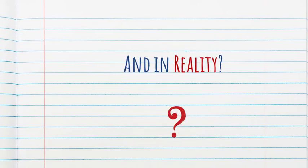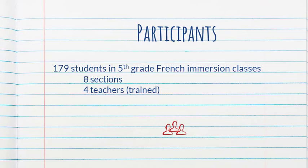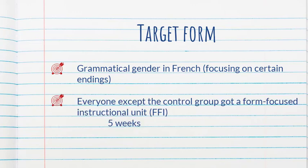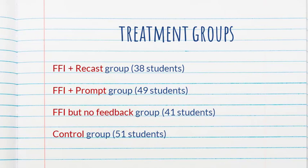Are prompts indeed more effective than recasts? That's what the study is trying to find out. The participants were 179 students in fifth-grade French immersion classes in Canada, and there were a total of four teachers. The teachers received training from the researchers about the targeted forms and the types of feedback they were supposed to provide. The target form was grammatical gender in French, focusing on certain word endings. Everyone except the control group got a form-focused instructional unit, which we'll call FFI — essentially explicit instruction about gender agreement in French.